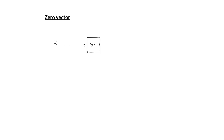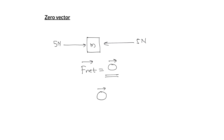The next term is zero vector. A zero vector is a vector of magnitude zero, also known as a null vector. For example, if a 5 Newton force acts to the right and a 5 Newton force acts to the left, the net force has magnitude zero. Since force is a vector quantity, we represent it as a zero vector. The direction of a zero vector is indeterminate, and it is represented by the symbol 0⃗.